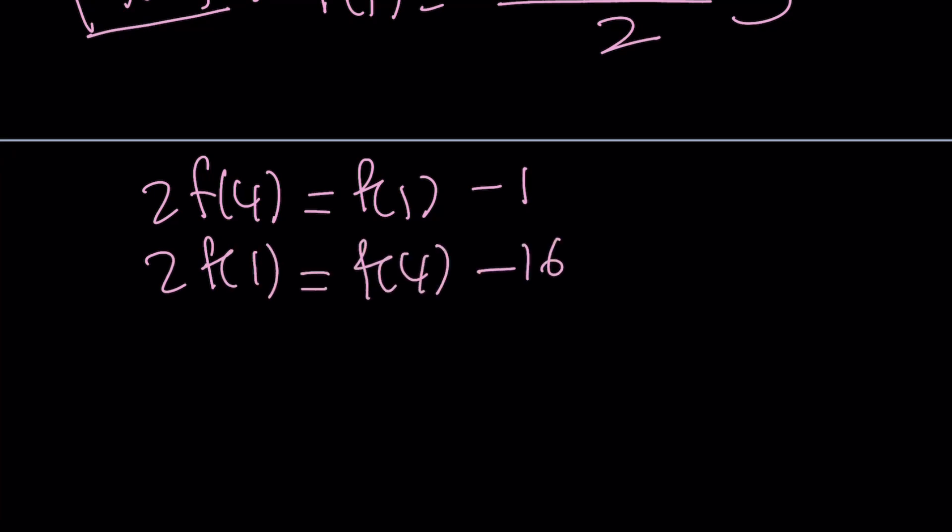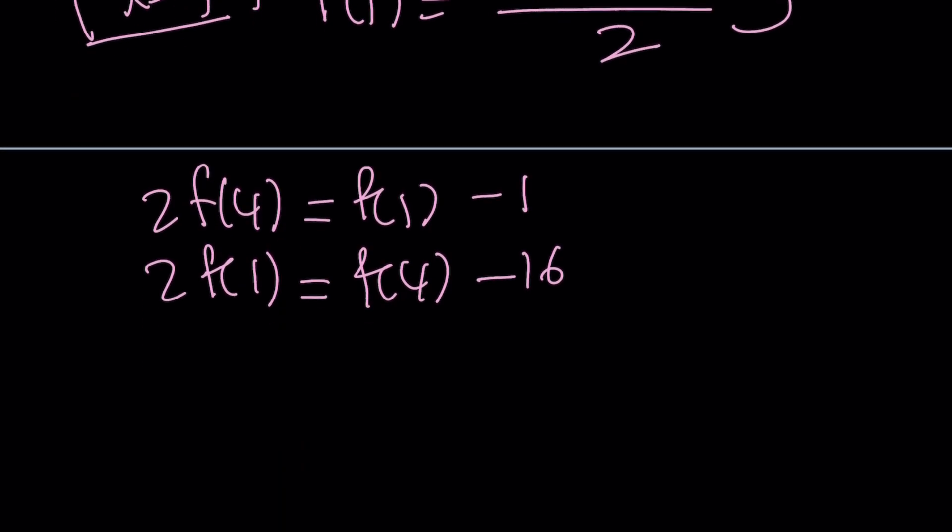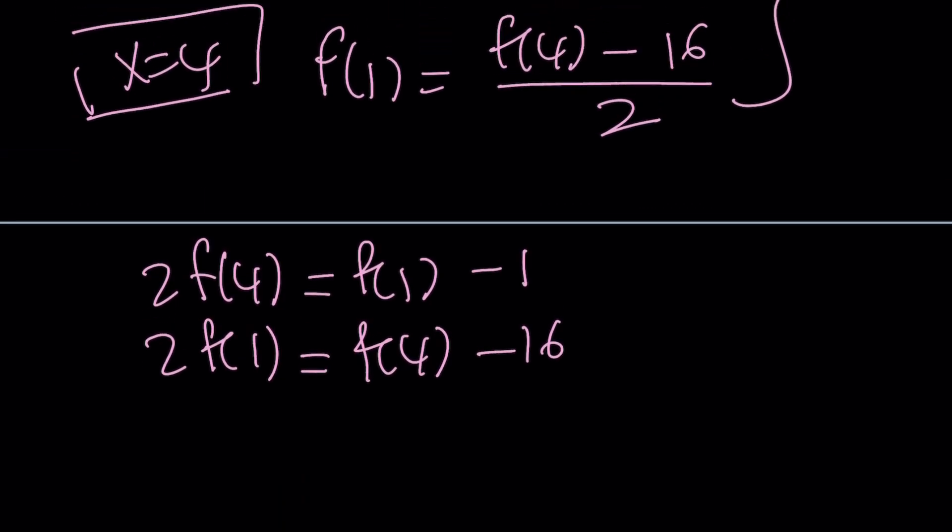Since I'm looking for f of 4, it makes sense to get rid of f of 1. Again, we have two methods here. Let me introduce both, substitution and elimination. Let's go ahead and start with substitution first.